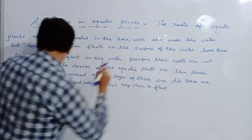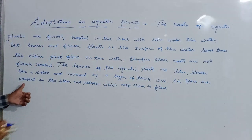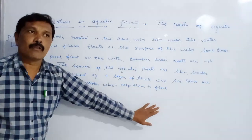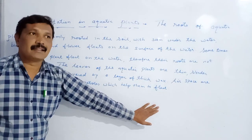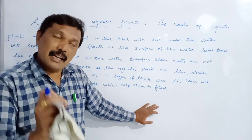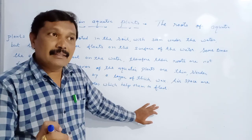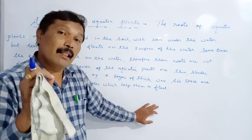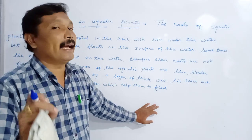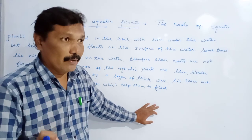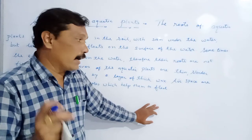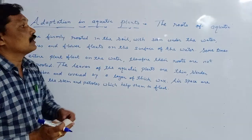Air spaces are present in the stem and petioles which help them to float. My dear students, these are the adaptations which are there in aquatic plants which help them to adjust to the surrounding so that they can survive. Again we will have brainstorming on adaptation in aquatic plants.